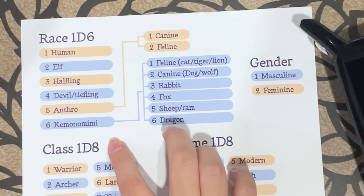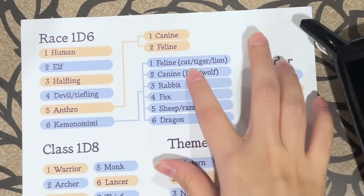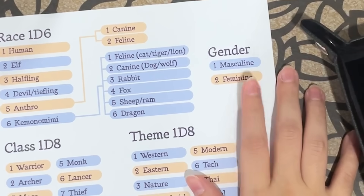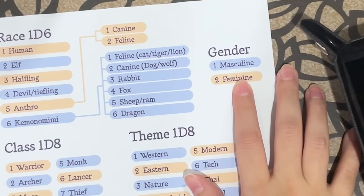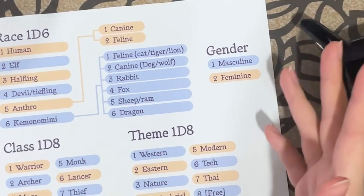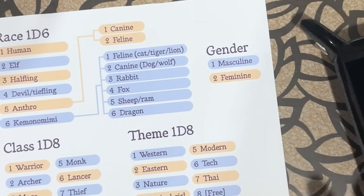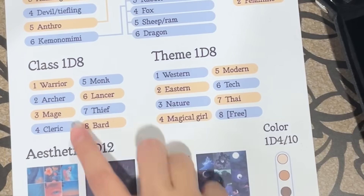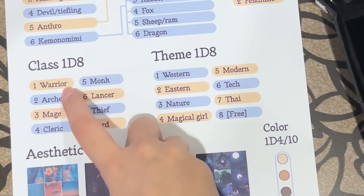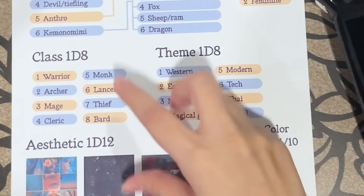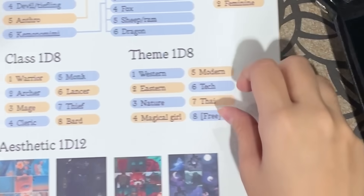And the last one is Kemonomimi, which is like cat girl, cat boy, stuff like that. I've got gender here, but I may not use it if I want to draw a more androgynous character — it's there if I want some direction. The class options — this should be swordsman or something but I forgot to edit it — are warrior, archer, mage, cleric, monk, lancer, dragoon, thief, and bard.